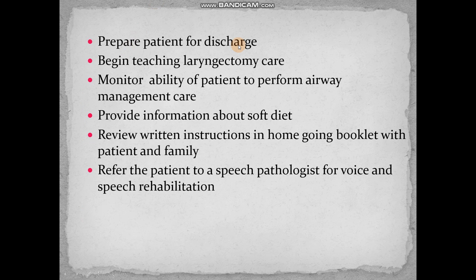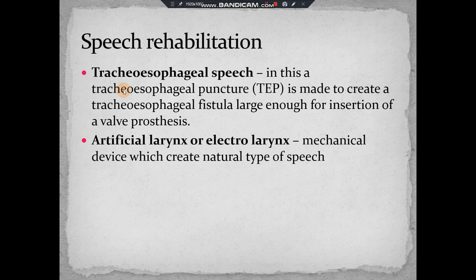Prepare the patient for discharge: teach care after laryngectomy including information about diet and airway management, and refer the patient to a speech pathologist for voice and speech rehabilitation. Provide written instructions in the form of a booklet so the patient can refer to it at home. For speech rehabilitation, tracheoesophageal speech (TEP), as well as an artificial larynx or electrolarynx, can be used. In TEP, a puncture is created between the trachea and esophagus, and through this puncture a fistula is created with the help of a prosthesis.